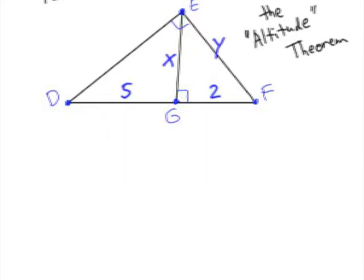Now you try the next example. We have a right triangle DEF with the altitude drawn from E to G, and the altitude is unknown. We'll call that X, and the leg Y is also needing to be solved. The hypotenuse is split into two parts, 5 and 2. Go ahead and hit pause and try this.